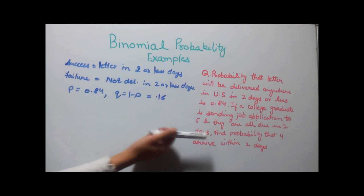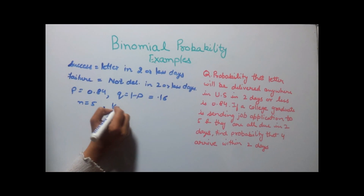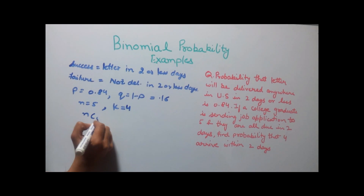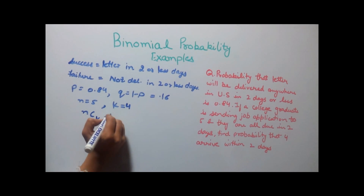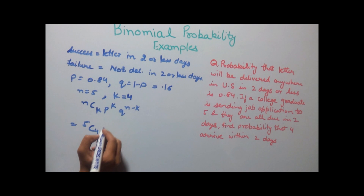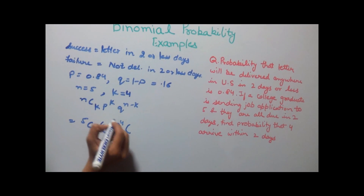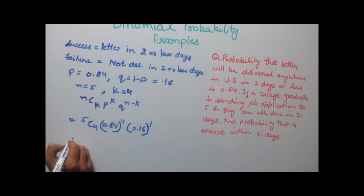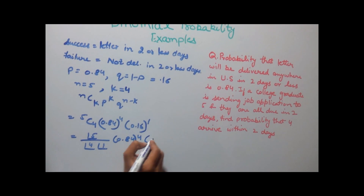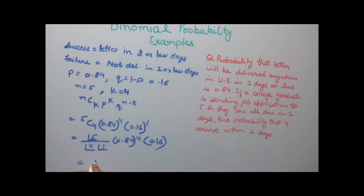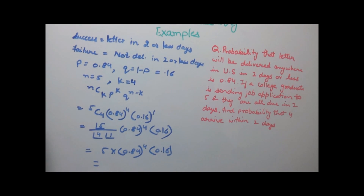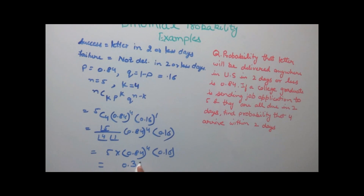The number of trials n is 5 because he sends 5 applications, so n equals 5, and k equals 4 because we need to find the probability of 4 arrivals. Putting these values into the formula NcK times P to the power K into Q to the power N minus K gives us 5C4 times 0.84 to the power 4 into 0.16 to the power 1. This gives us 5 times 0.84 to the power 4 times 0.16. Solving this, the final answer is 0.3986.